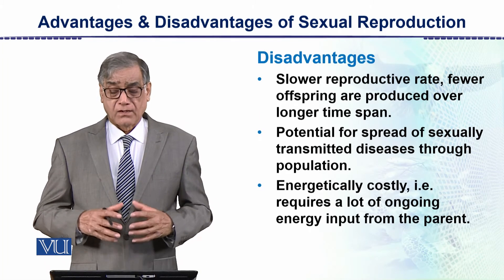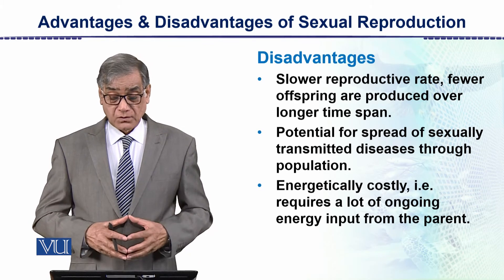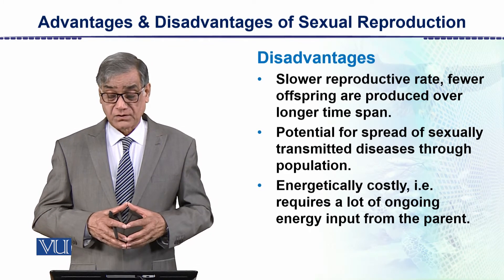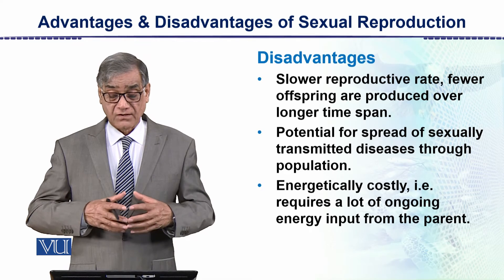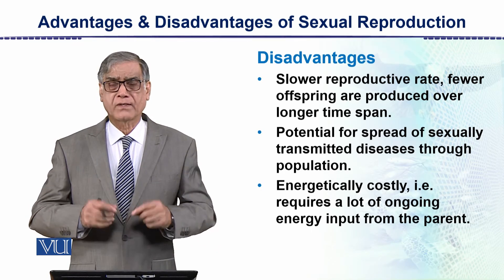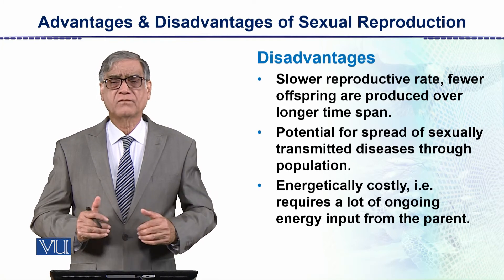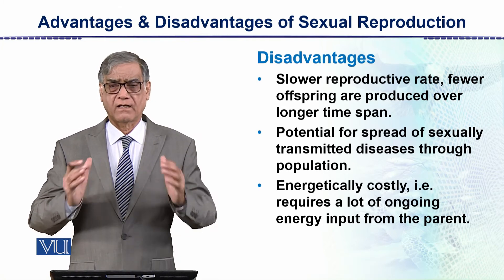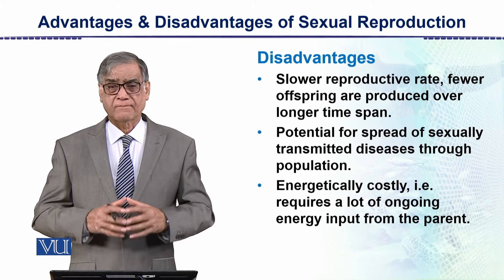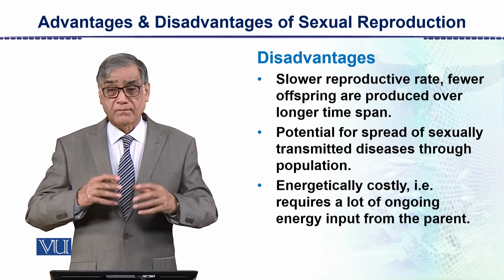Now the disadvantages. The first is a slower reproductive rate — fewer offspring are produced over a longer period of time. It takes a lot of time, and the population growth is slower.